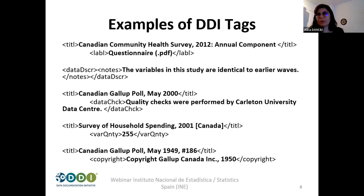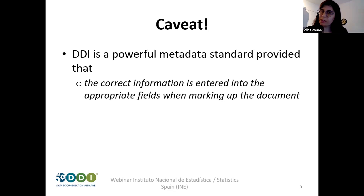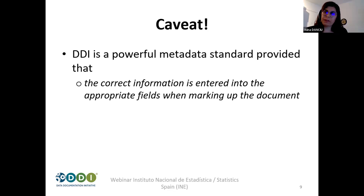This is just to let you know that you'll need a tool — you won't have the time or interest to write DDI XML by hand, even with great passion. DDI is a powerful metadata standard, but you have to be really careful that the correct information is entered into the appropriate fields when marking up the document. Otherwise you'll end up with inconsistencies — for example, about four years ago, we realized we were using different fields for the producer or authors. We had to harmonize that.